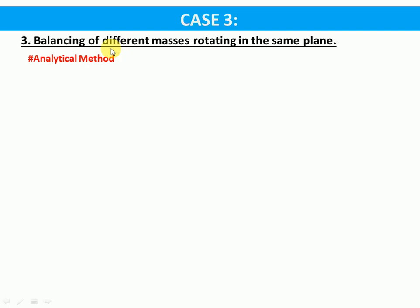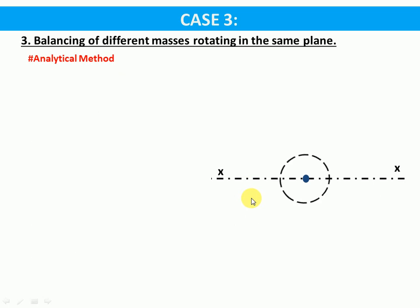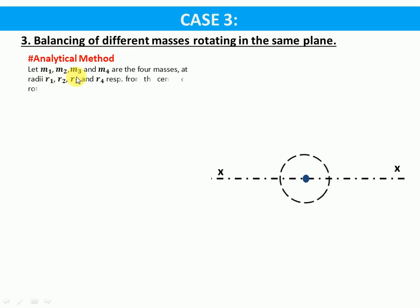This balancing of different masses rotating in the same plane will be solved by analytical method and also by graphical method. Consider an axis XX as the axis of rotation, where masses m1, m2, m3, and m4 are four masses at radii r1, r2, r3, and r4 respectively from the center of rotation.